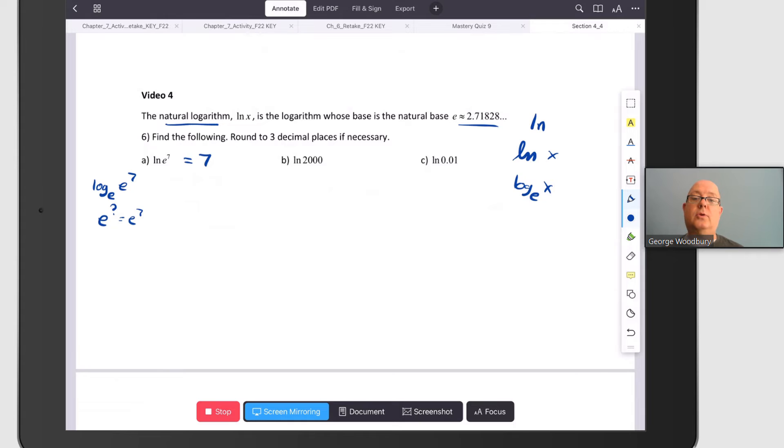Let's try that one in the calculator first, and then we'll follow that up with the natural log of 2,000 and also of 0.01.